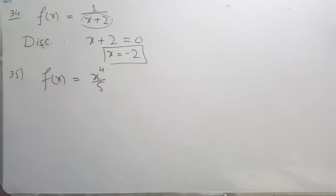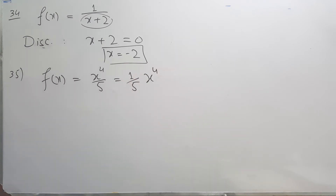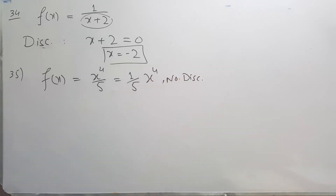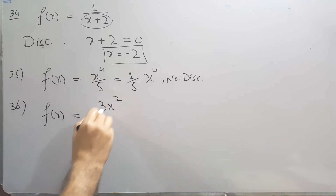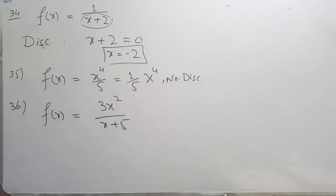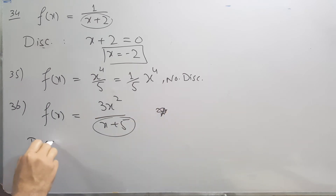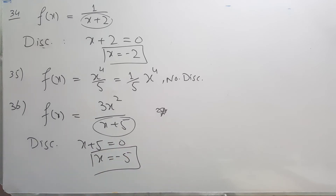For question 35, the function is x to the power 4 over 5, which we can write as one-fifth times x to the power 4 — that is again a polynomial, so it has no discontinuity; it is continuous everywhere. For question 36, the function is 3x squared over x plus 5. Again, the discontinuity is when q(x) equals zero, so when x plus 5 equals zero, which means x equals negative five. There is a discontinuity at x equals negative five.